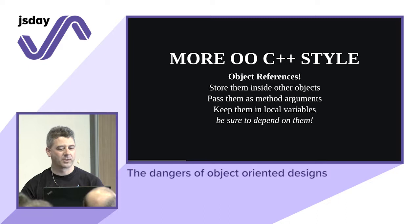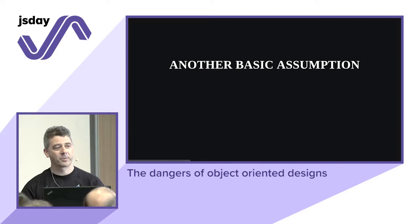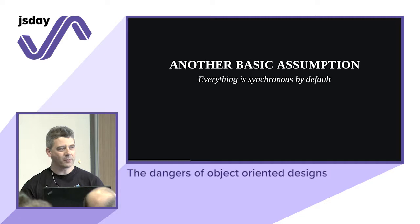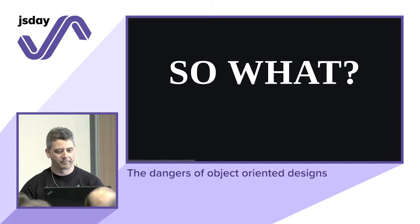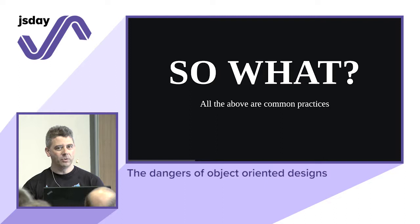Object references are probably the most crucial thing in this talk. Another basic assumption is that everything is synchronous by default. Method calls, argument passing, and object creation are all synchronous — every mutation is expected to happen exactly when you invoke the thing. So what's the problem? All of the above are really common practices — you can design however you want, but you're going to do all those things.